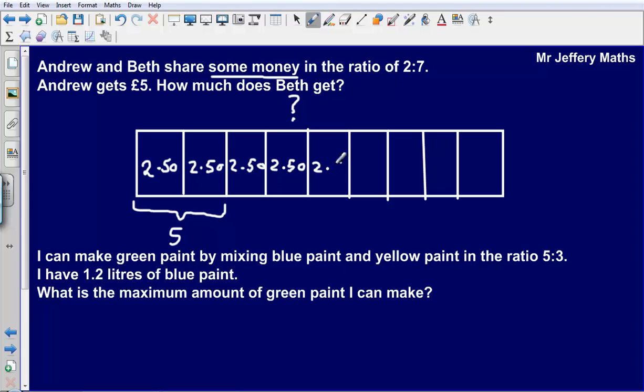Andrew got two of them, Beth got seven of them. So to figure out how much Beth got, that's two pounds fifty multiplied by seven. Two pounds fifty multiplied by seven will give us an answer of seventeen pounds and fifty pence. So Beth gets seventeen pounds fifty.